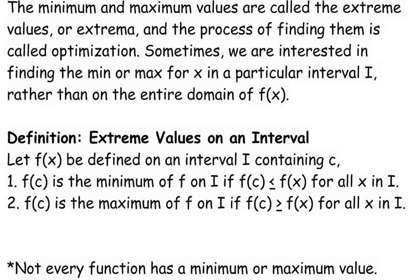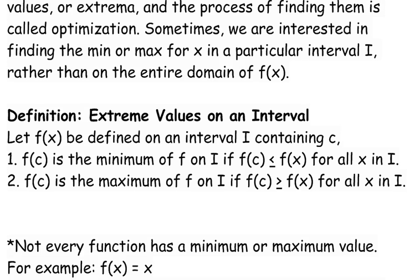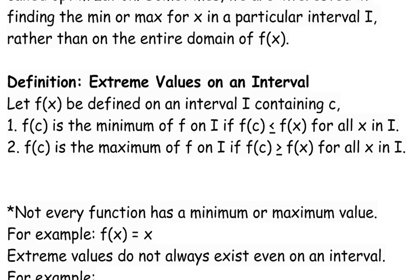We have our definition here — these are just the technicalities. F of c is the minimum of f on the interval if the y value is less than all the other y values in the interval. Kind of makes sense, right? It's the minimum if it's less than all the other y values, and it's the maximum if it's greater than all the other y values.